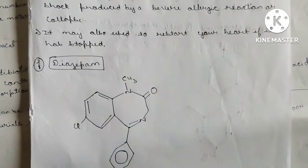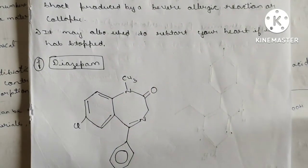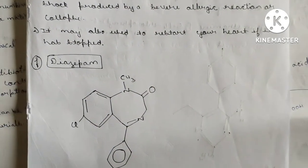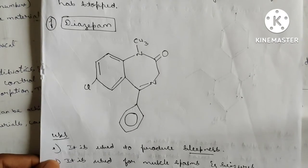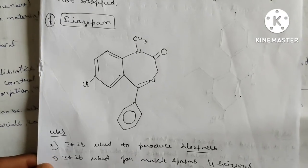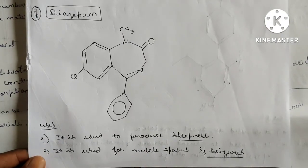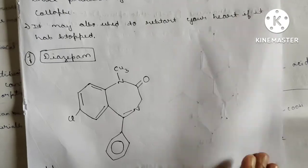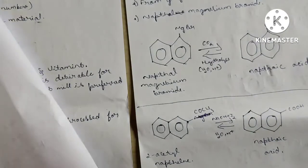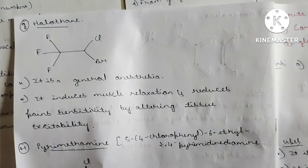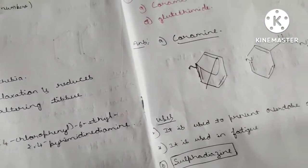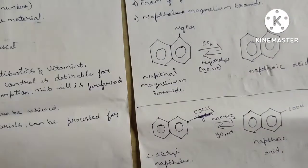Diazepam: A sedative drug used to produce sleepiness and used for muscle spasms and seizures. Halothane: A general anesthetic. It induces muscle relaxation and reduces pain sensitivity by altering tissue excitability.